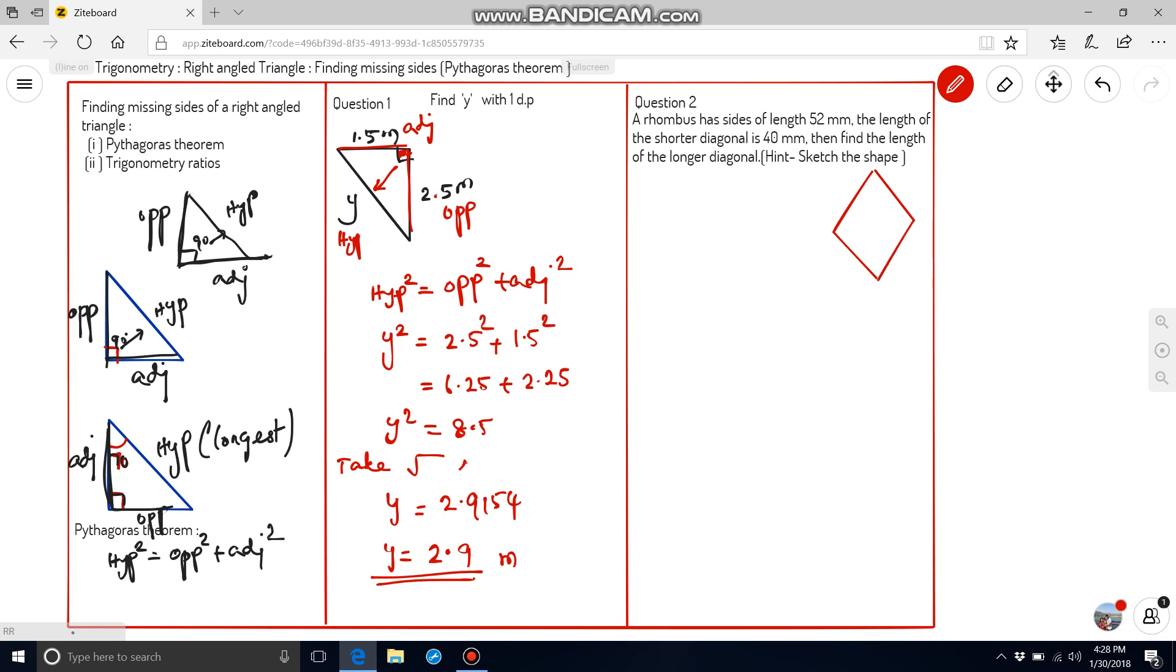Here, in this rhombus, the property is all the four sides are equal. So, they have given the side is 52 mm. This is 52. So, all the four sides will be 52 only. And, the shorter diagonal is 40 mm. This is shorter. And, this is longer.